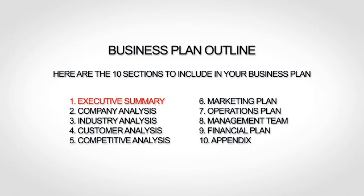The first section is your executive summary, which is essentially the introduction to your business plan. Then the next section is your company analysis, which gives a little more background. Next up is your industry analysis, where you talk about your market and trends. The fourth section is your customer analysis, where you go more in depth about your target market. The fifth section is your competitive analysis, where you provide an analysis of your competition, including what differentiates you from your competitors.